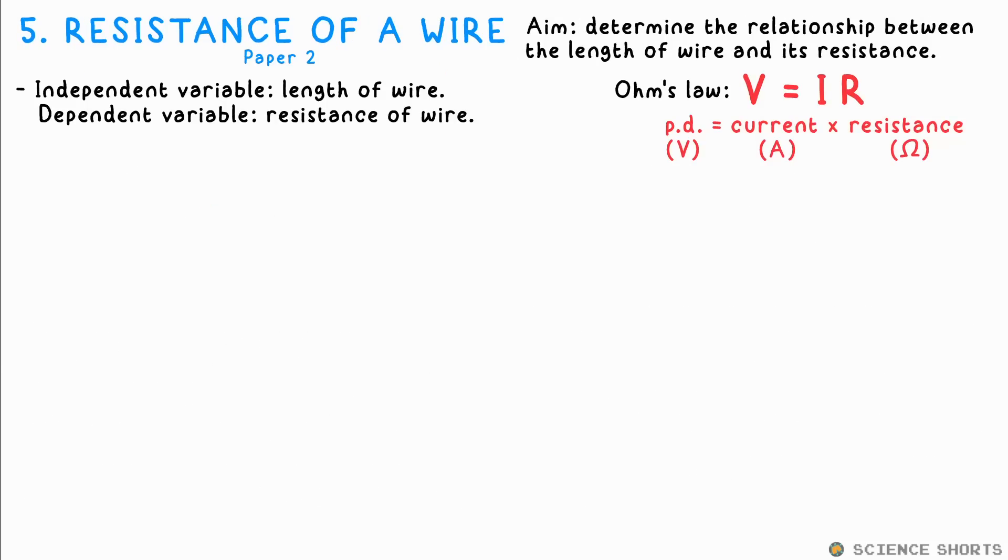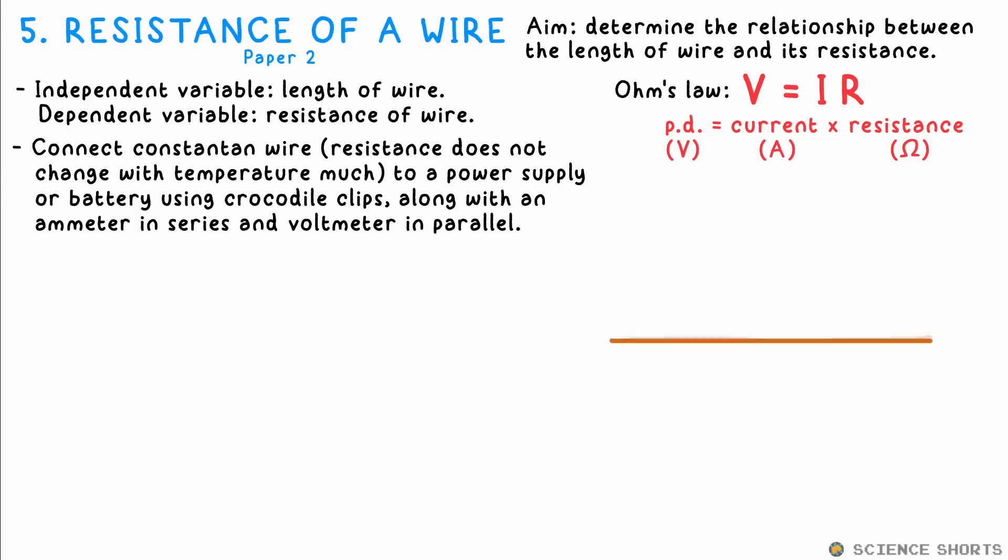Physics five, circuits. Now there's all sorts of little different experiments that you can do for this, like resistors in series and parallel on thermistors and LDRs, etc. But I'm just going to do the standard resistance of a length of wire. If you want to see the other ones, just watch my electricity video. We just want to see the relationship between length of a wire and its resistance. We use constantan wire as its resistance doesn't change much when it gets hotter, which is what we want.